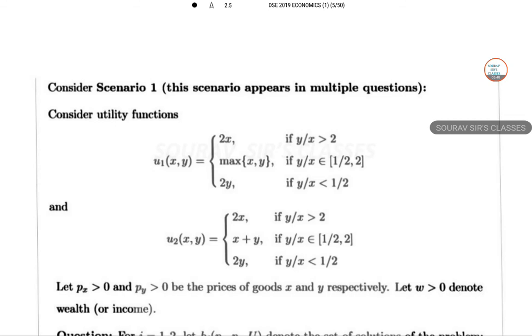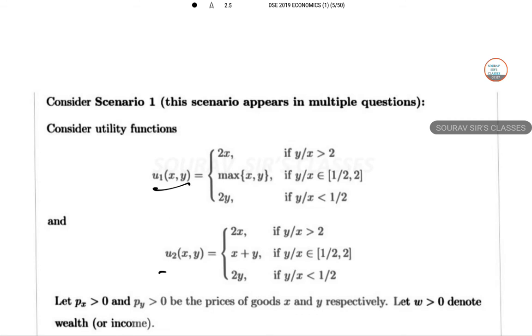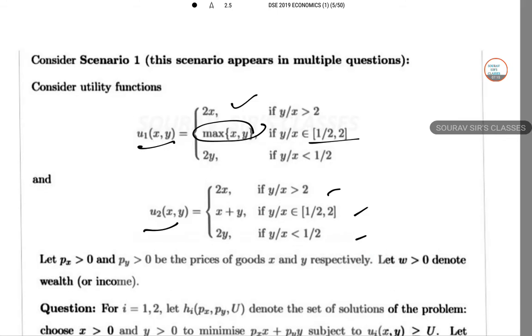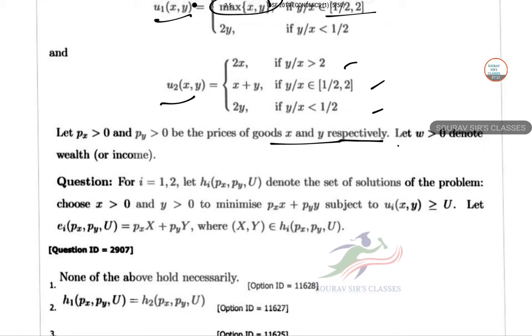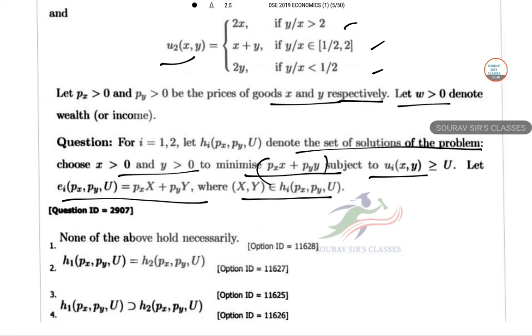We have another scenario-based question. U₁ and U₂, two utility functions. Maximum occurs of x or y if it lies between 0.5 to 2. Similar type of structure in the second, but the second one gives a linear. Let pₓ and pᵧ be the prices of good x and y respectively. W greater than 0 denote wealth. For i = 1, 2, denote the solution of the problem: choose x and y to minimize pₓx + pᵧy subject to utility constraint. Let the expenditure function be given in this way.